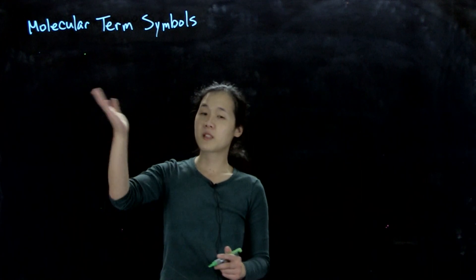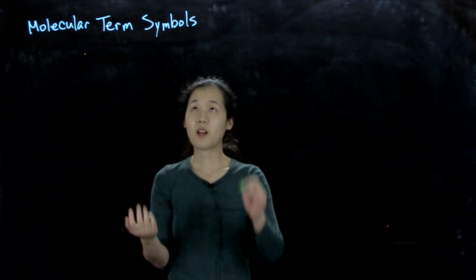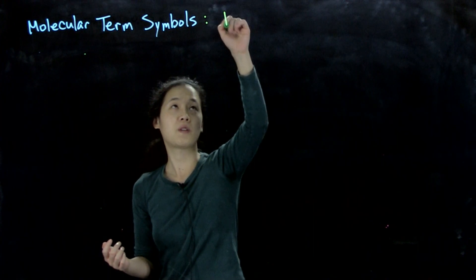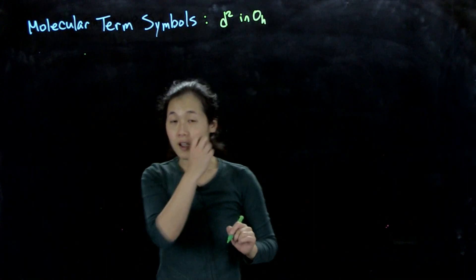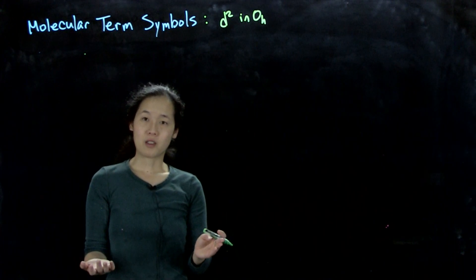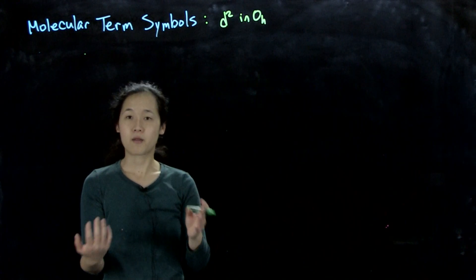Okay, so when we think about molecular term symbols, once we add in multiple electrons, so in this video we'll do d² in an octahedral field, then we also get electron-electron repulsion problems, so we'll get more states that arise from that.